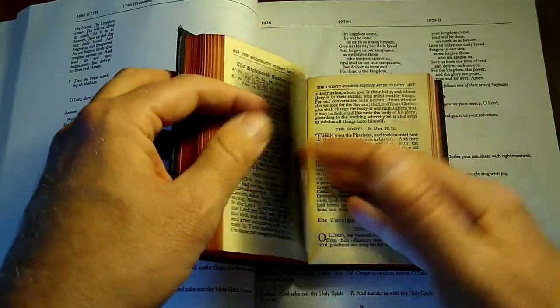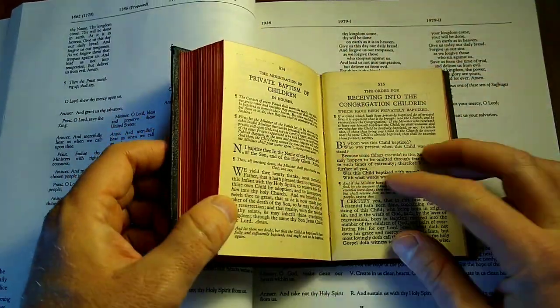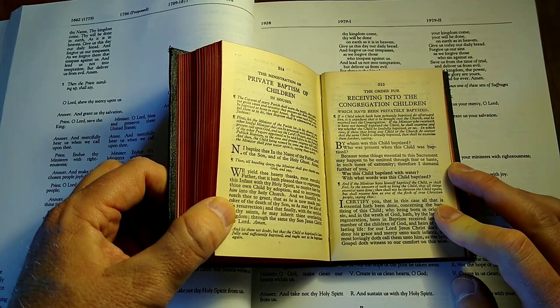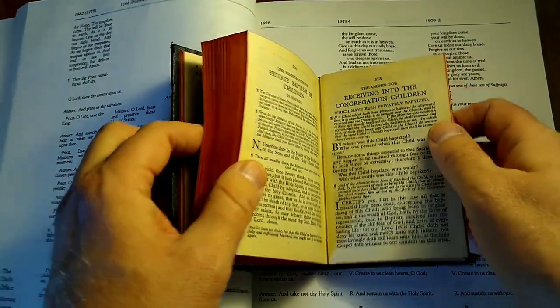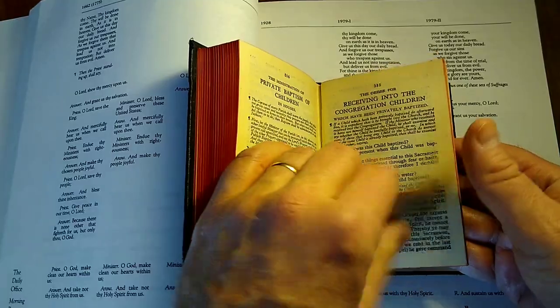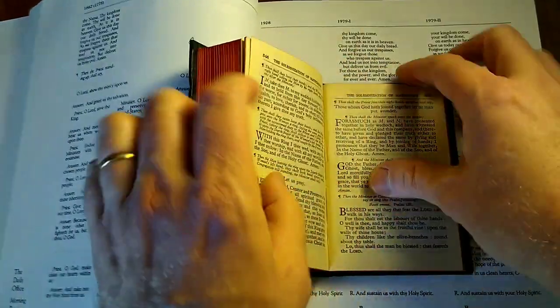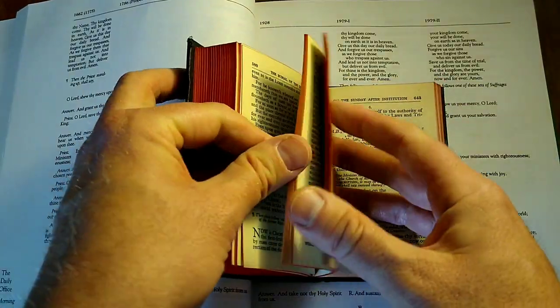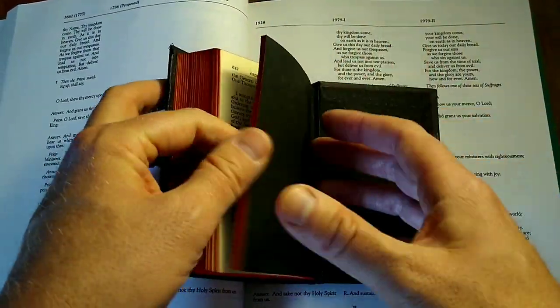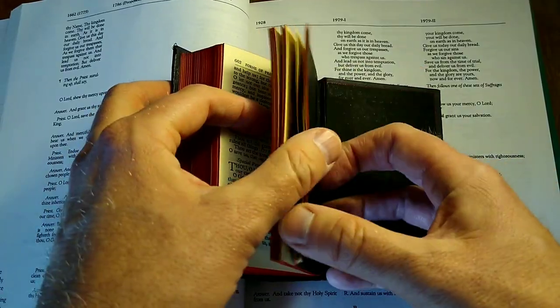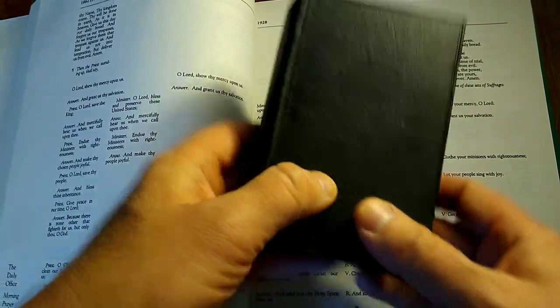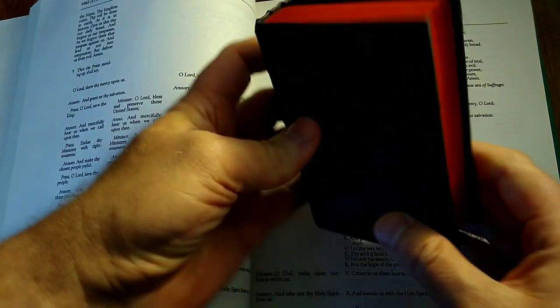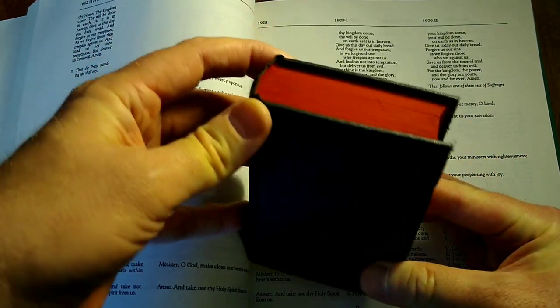And then we have the collects, epistles and gospels following that. In 1662 and American prayer books, the collects, epistles and gospels are before the Psalter—they just have it arranged differently here. Services appear to be the same in terms of what's included, but I'm not going to go through the details of each service to see how they compare. If I'm curious about a particular one, I'll look that up, but before I get even lengthier than it already is.